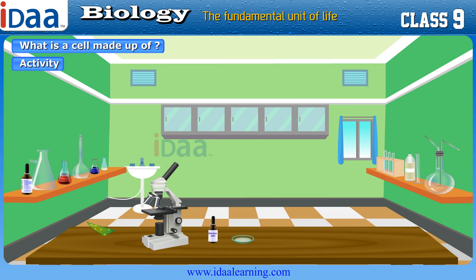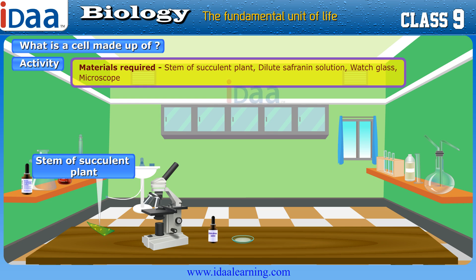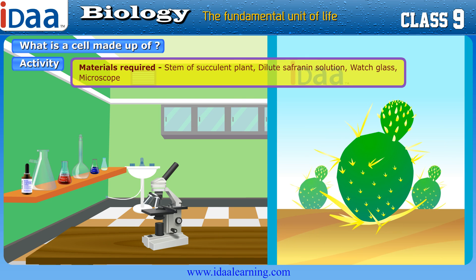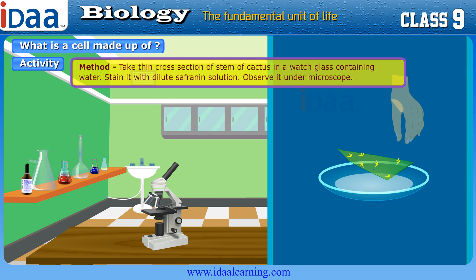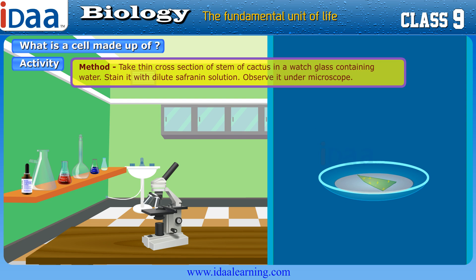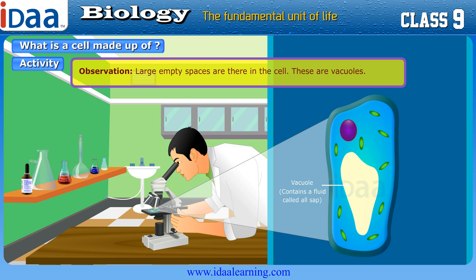Activity: Aim — To observe plant vacuoles. Materials required: stem of a succulent plant, dilute safranin solution, watch glass, and microscope. Method: Take a thin cross-section of a cactus stem in a watch glass containing water. Stain it with dilute safranin solution and observe it under the microscope. Observation: Large empty spaces are present in the cell — these are vacuoles.